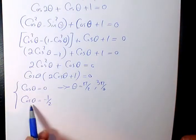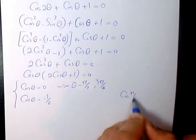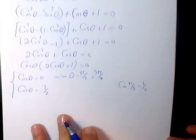And the second part we have cos(θ) = -1/2. We know cos(π/3) is 1/2, positive 1/2.